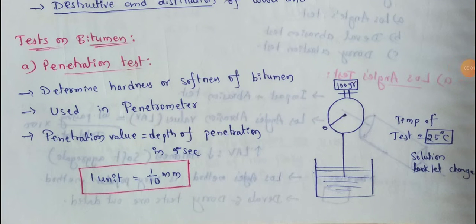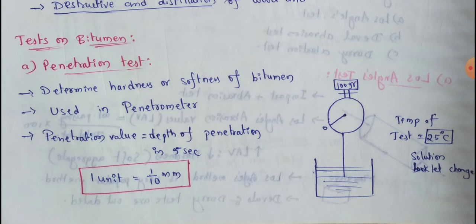Next topic: bitumen test. I will conduct different types of tests, like penetration test, ductility test, viscosity test, and flash and fire point test. I conduct bitumen with ductility value, viscosity value, and penetration value. If you check these values, then you can check the road payments if you don't use the test.